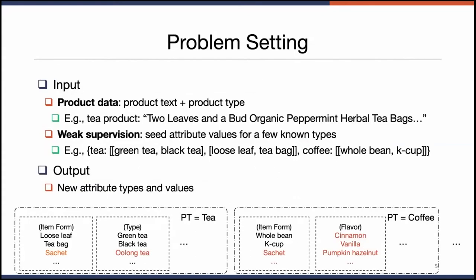To wrap up our problem setting: for input, we have product data including product text and product type, and also weak supervision in the form of seed attribute values. For output, we want the model to find both new attribute types and new attribute values. The output looks like clusters for each product type, where each cluster represents an attribute and each member represents an attribute value.